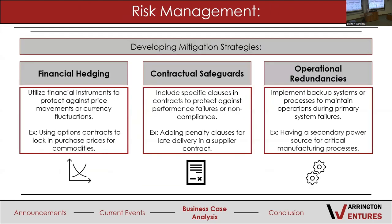Risk management can be mitigated in different ways: financial hedging, contractual safeguards, and operational redundancies. Financial hedging — like a hedge fund — involves investing in different stocks to mitigate risk, and using options with strike prices set at a buy or sell price, depending on whether you're buying a put or a call. This allows you to automatically buy a stock if it drops to a certain level or sell it when it reaches a certain level, which can also expedite your returns.